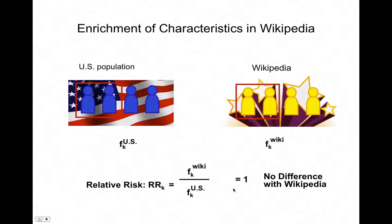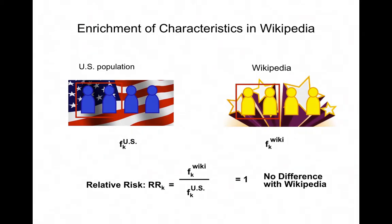The way we do this is by looking at the enrichment of characteristics in Wikipedia. If you look at the U.S. population and half of it has a certain characteristic, and then you look in Wikipedia and see that half also have that characteristic, you compare the frequencies of that characteristic in the U.S. population with that of the Wikipedia population. This is defined as the relative risk (RR): the frequency of a characteristic in Wikipedia divided by the frequency in the U.S. If they're the same, the relative risk is 1 and there's no difference.